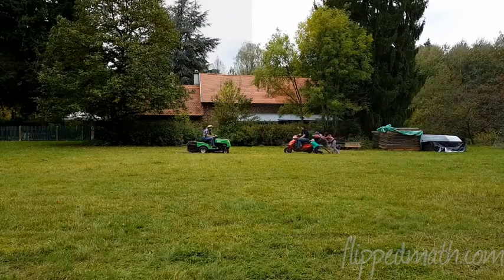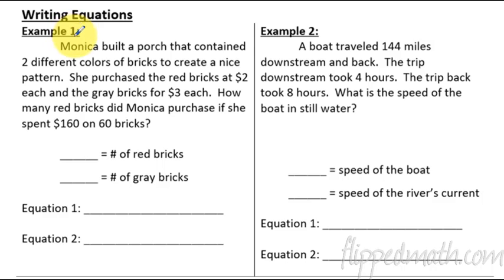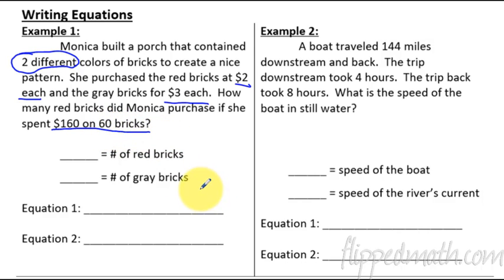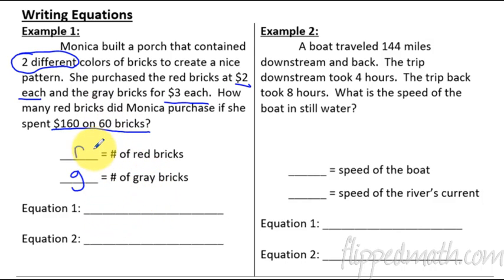Example one: Monica built a porch containing two different colors of bricks. She purchased red bricks at two dollars each and gray bricks at three dollars each. How many red bricks did Monica purchase if she spent $160 on 60 different bricks? The unknowns are the number of red bricks and gray bricks, so we use r for red and g for gray. Since there are 60 total bricks: r plus g equals 60.